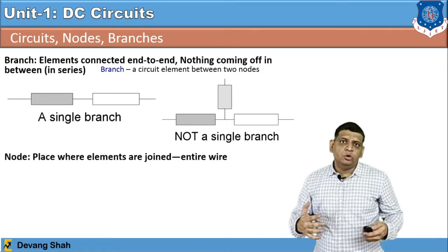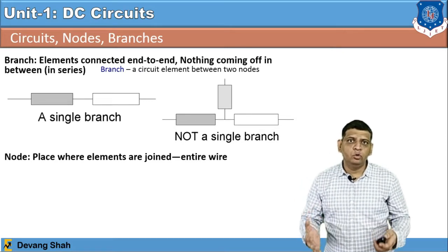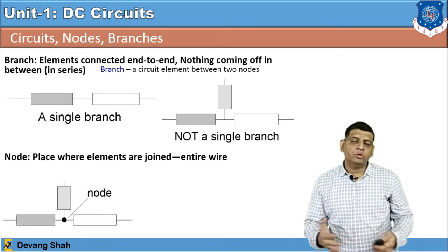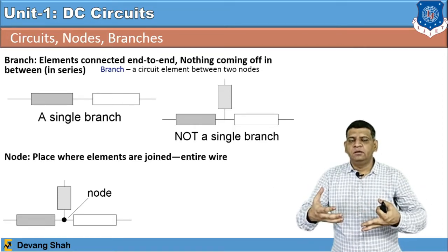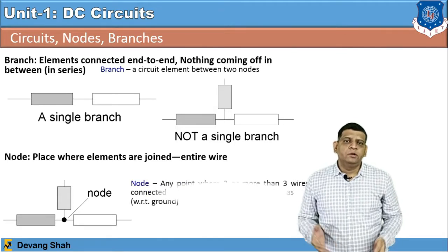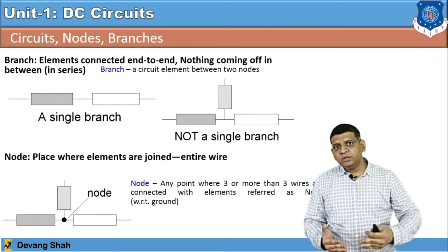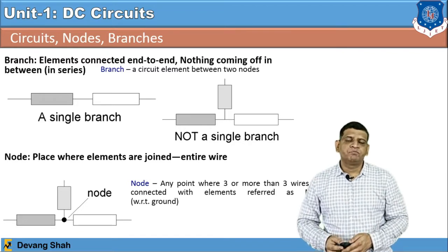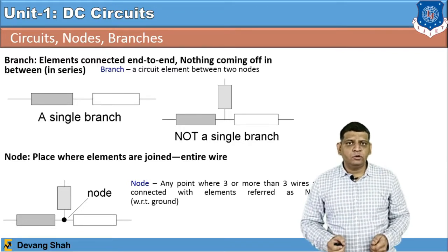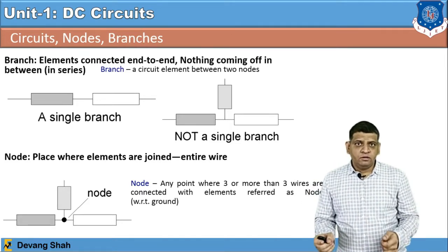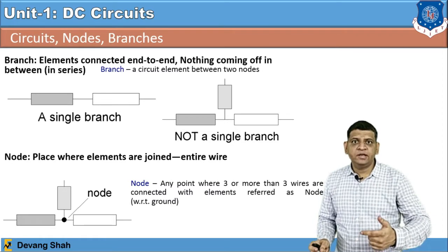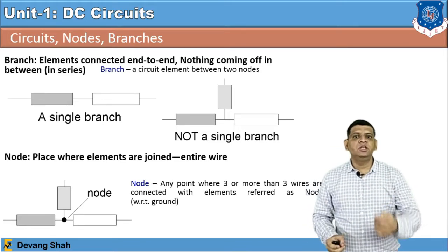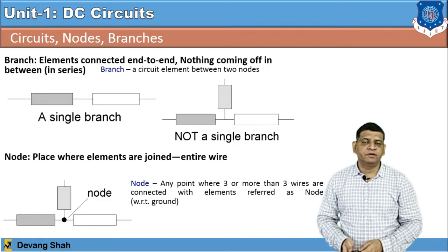Next is the node. What do you mean by a node? Ultimately, where all elements are connected, that point is called a node — a junction where all components are connected. So at any point where three or more components or three or more wires are connected with a component, that is referred to as a node.